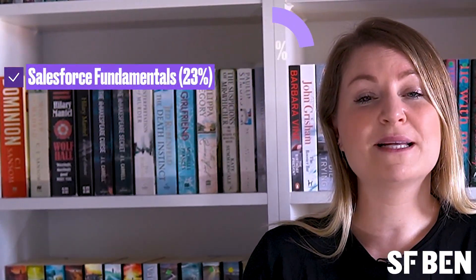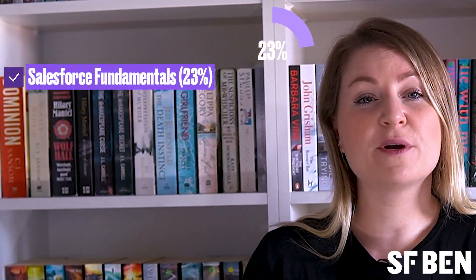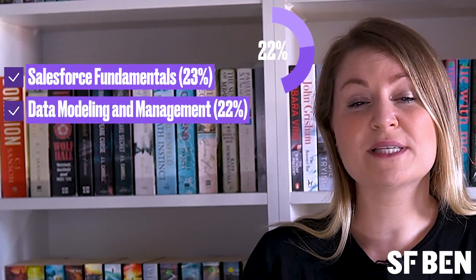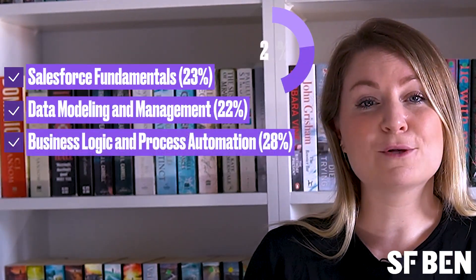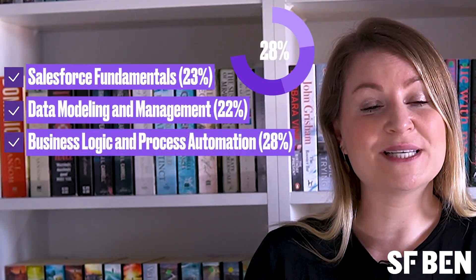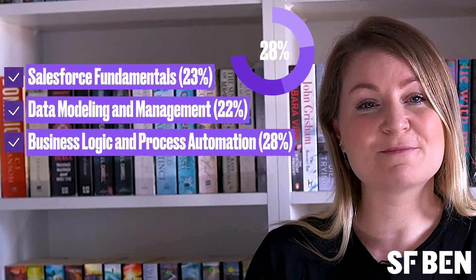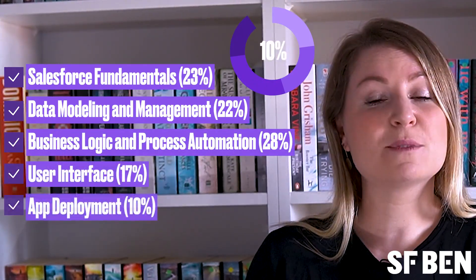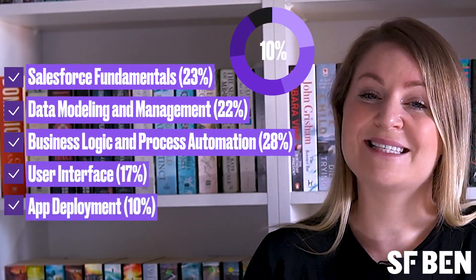The exam is split into five topics: Salesforce fundamentals at 23%, data modeling and management at 22%, business logic and process automation at 28%, user interface at 17%, and app deployment at 10%. Let's take a look in more depth at what you can expect in each topic.